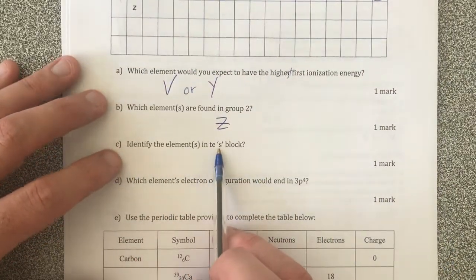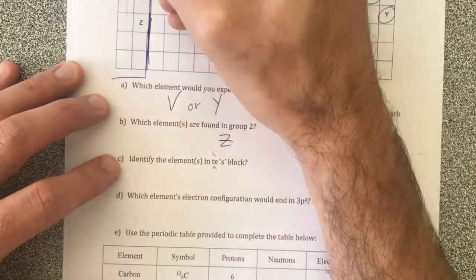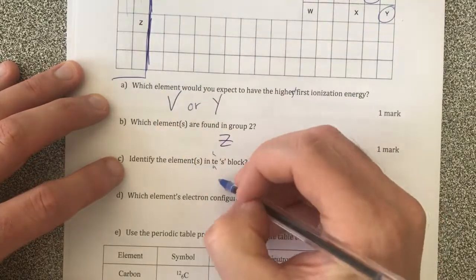Identify the element in the S block. The S block. Well, S block is here. This is our S block and that is also Z. Remember, S, P, D is the way it works.